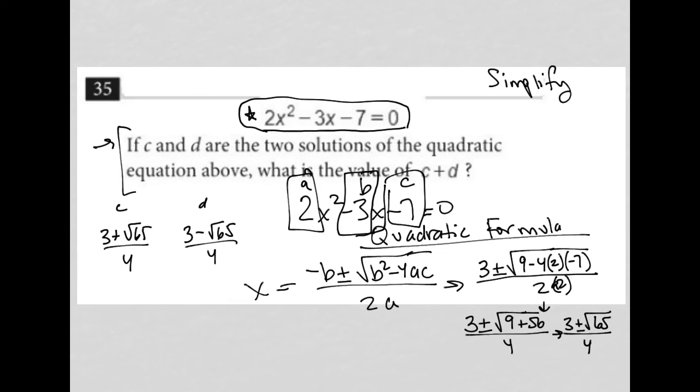So C plus D would be just adding those things together. We have common denominator, which means I'd have 3 plus root 65 plus 3 minus root 65 all over 4. My radical 65s would cross out because I have a positive and a negative.